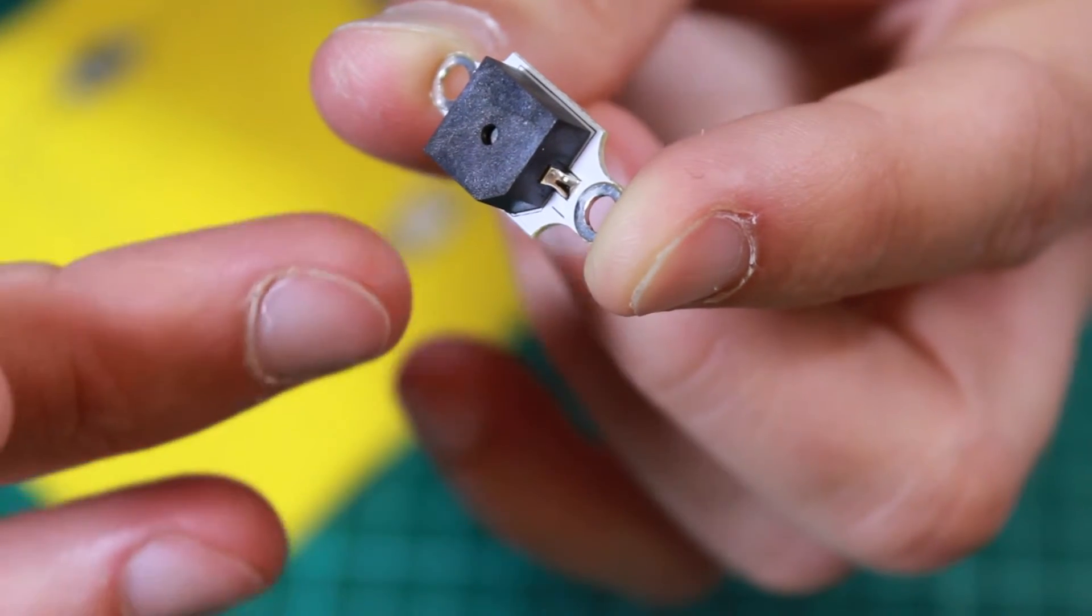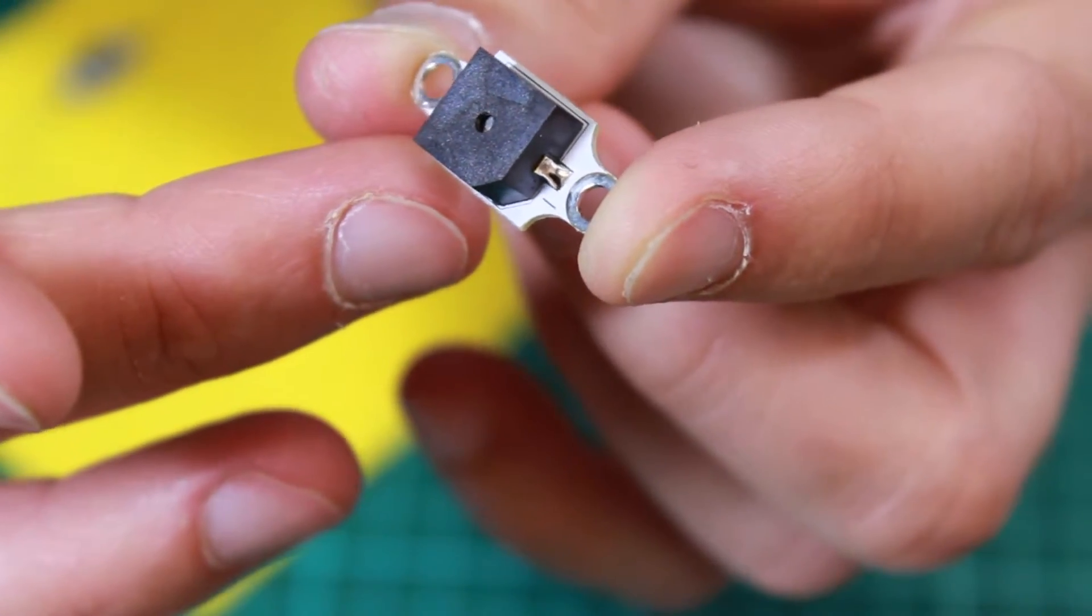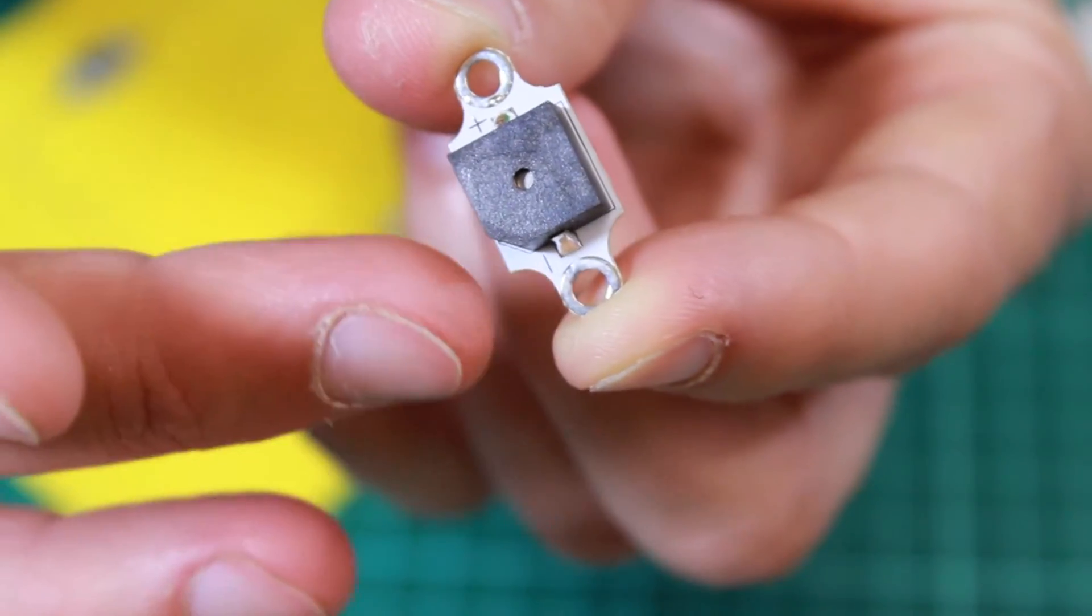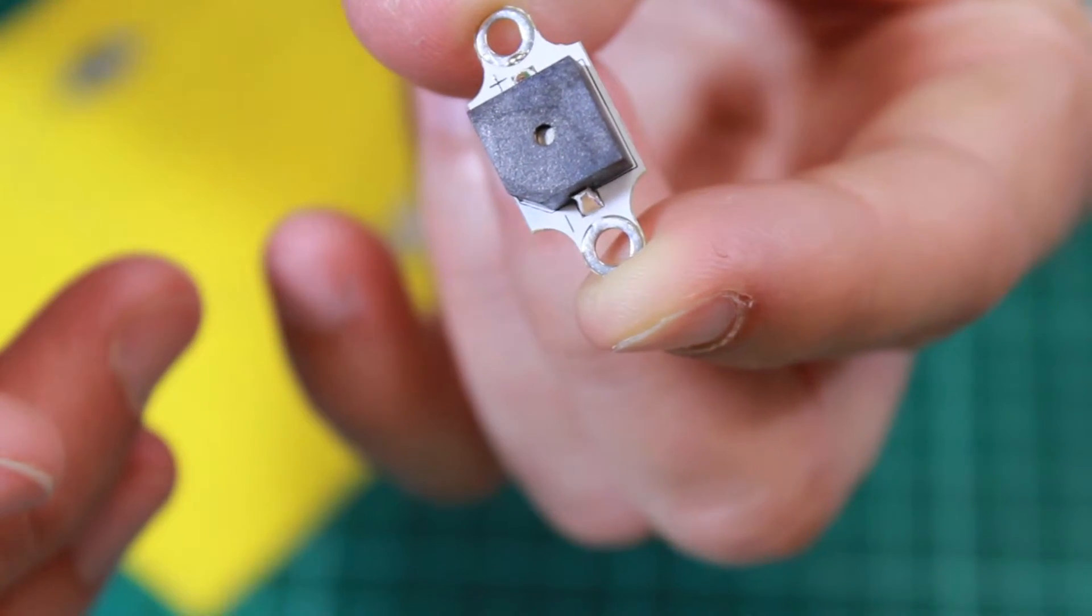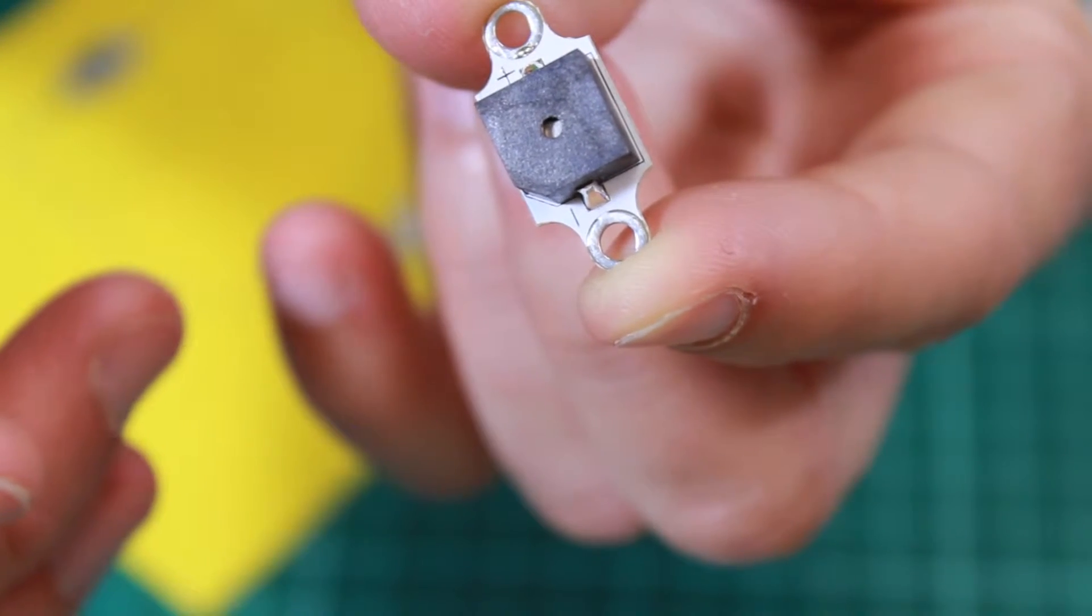So here we can see the buzzer. This is mounted onto this specially designed PCB that has clear plus and minus indications so that we can see how to mount it into our circuit.